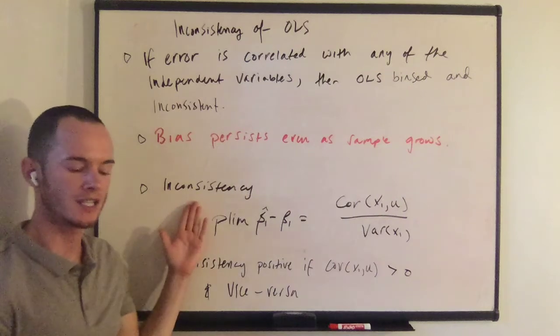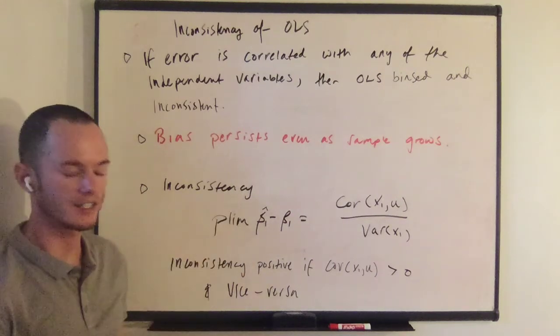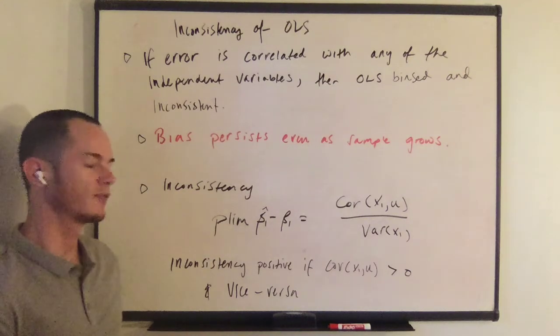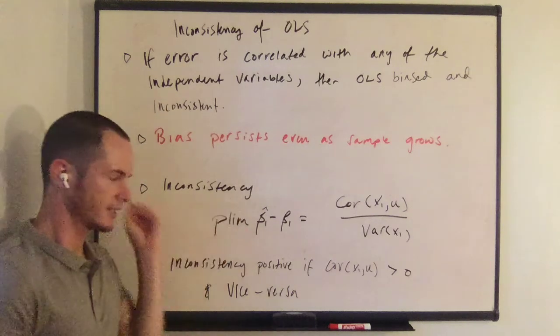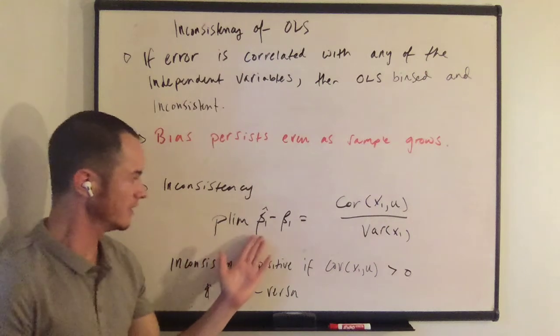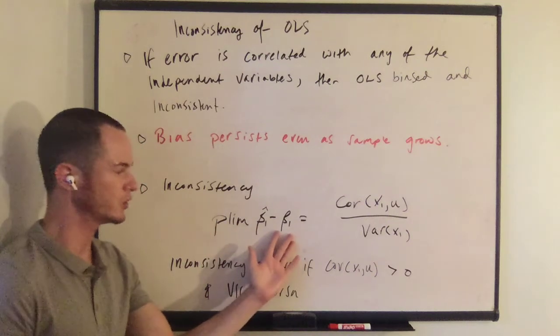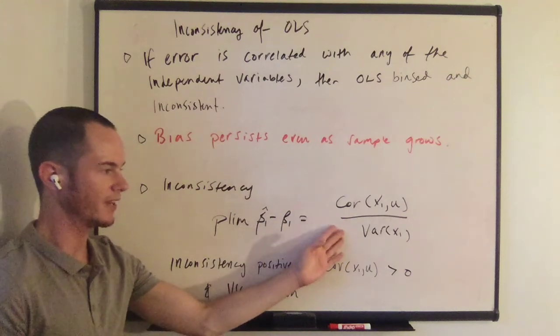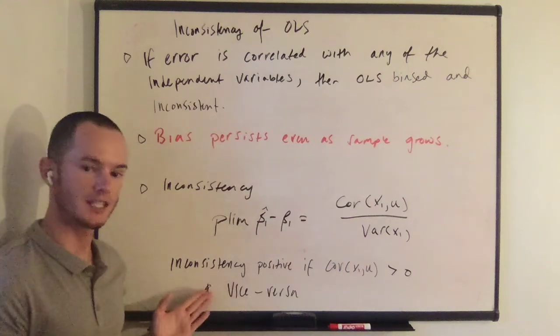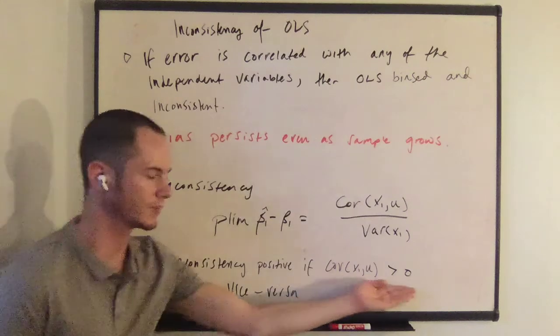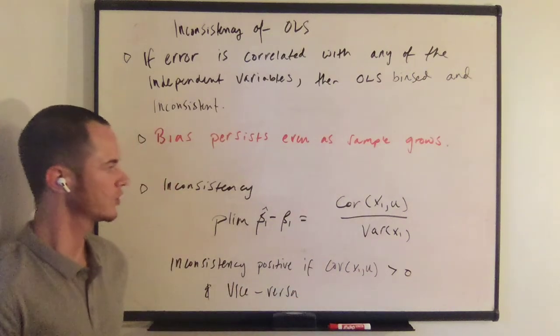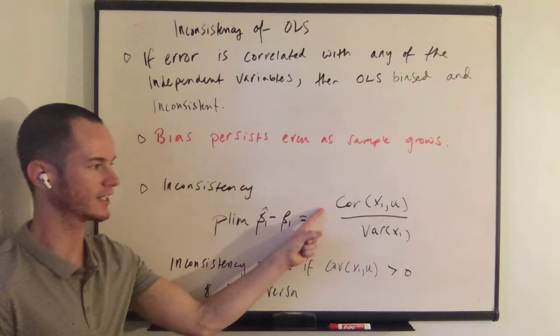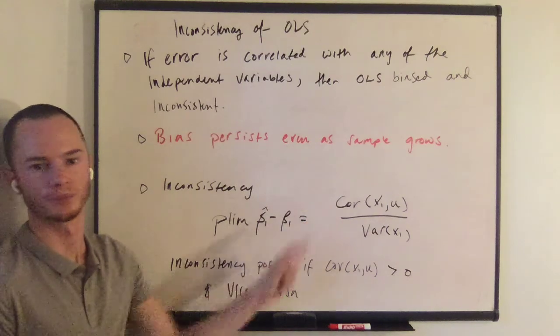So here is how we define inconsistency, and this definition comes from the derivation of the consistency of OLS from the previous video. The definition of inconsistency is the probability limit of beta 1 hat minus the true value of beta 1, which is equal to the covariance between x1 and u divided by the variance of x1. The inconsistency is going to be positive if the covariance between x1 and u is positive and vice versa. So you have inconsistency if the covariance is not equal to zero.